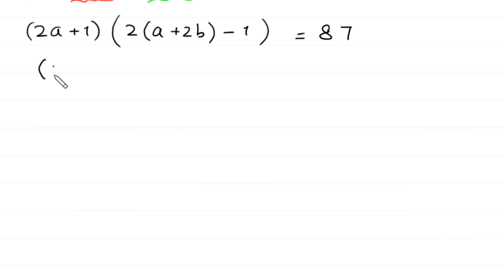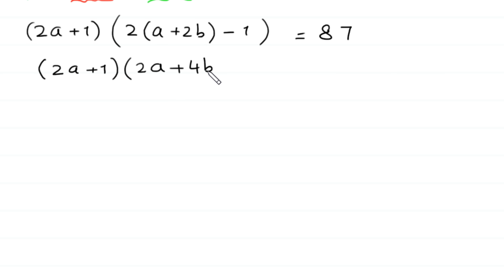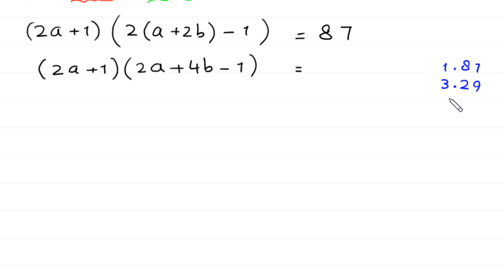Next, we expand: 2a plus 1 times 2a plus 4b minus 1 is equal to 87. We factorize 87: it can be written as 1 times 87, 3 times 29, 29 times 3, and 87 times 1. Because we are looking for positive integer values where a and b are both greater than 0, the expression 2a plus 1 must be smaller than 2a plus 4b minus 1.